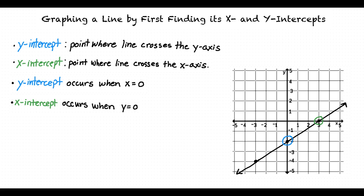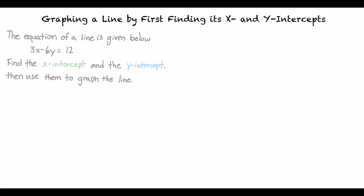Could we try an example problem? Here, we have a problem asking us to find the x- and y-intercepts of the line with the equation 3x minus 6y equals 12. Once we have found the x- and y-intercepts of this line, we can then use this information to graph the line.